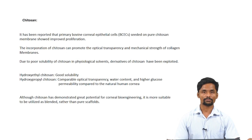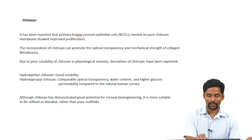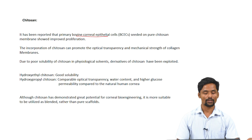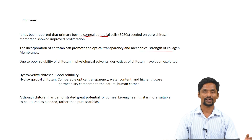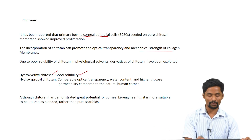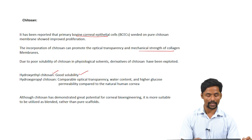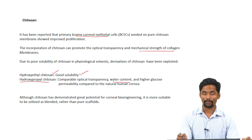Chitosan is derived from chitin by a deacetylation process. It has been reported that primary bovine corneal epithelial cells seeded on pure chitosan membranes showed improved proliferation. Incorporation of chitosan can promote the optical transparency and mechanical strength of collagen membranes. However, chitosan is very poorly soluble in physiological medium. Hence, derivatives such as hydroxyethyl chitosan and hydroxypropyl chitosan have been developed, with the latter showing comparable optical transparency, water content, and high glucose permeability compared to natural human cornea.